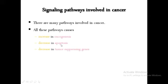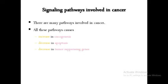Apoptosis means programmed cell death. If a cell has completed its life cycle, has no function left to perform, and has used all its nutrients, the cell's own machinery kills itself because that cell is now useless. But in cancer, apoptosis decreases. The last is decrease in tumor suppressing genes — those genes that suppress tumor. But in cancer these tumor suppressing genes decrease, so tumor doesn't get suppressed and grows, ultimately leading to cancer.